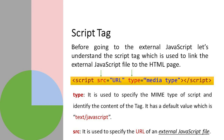Before going to external JavaScript, let's understand the script tag used to link an external JavaScript file to the HTML page. We need a script tag, which can be written in the head tag or the body tag. The script tag has an attribute called 'src' (source) and another attribute called 'type', which is the media type. The type attribute is used to specify the MIME type of the script tag and identify the content. Its default value is 'text/javascript'.